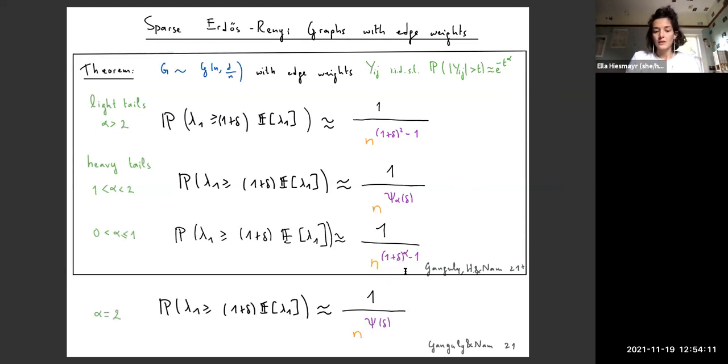For sake of completeness, let me mention that the case alpha is equal to 2, which is the Gaussian case, has been covered by Ganguly and Nam earlier this year. In that case, we get a rate function that is similar to the rate function when alpha is between 2 and 1.